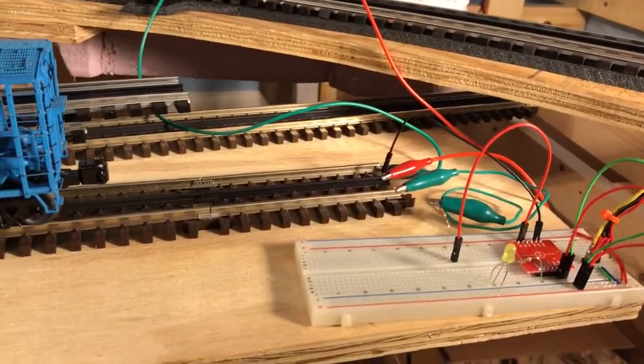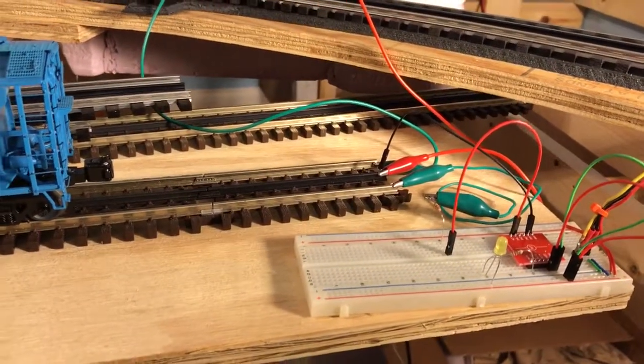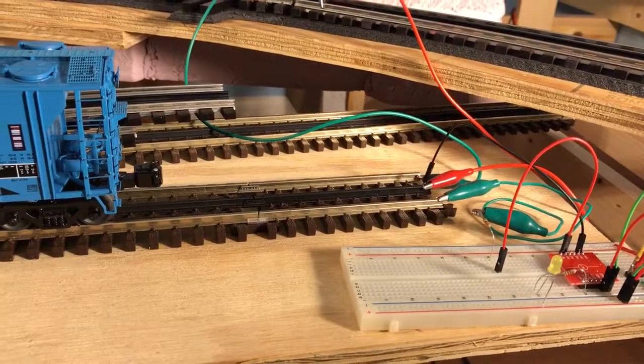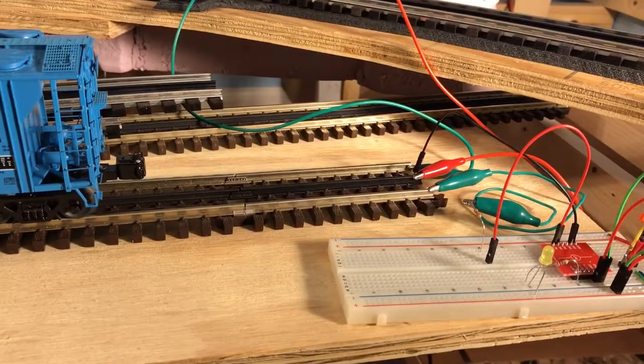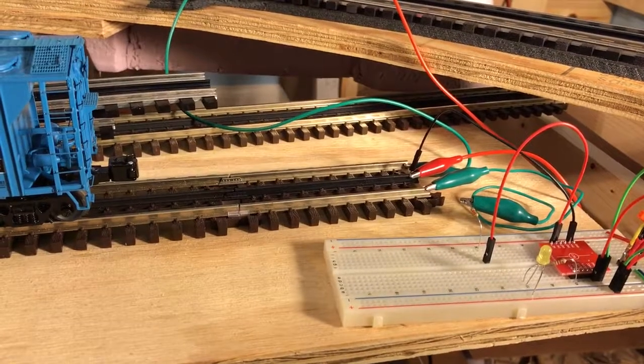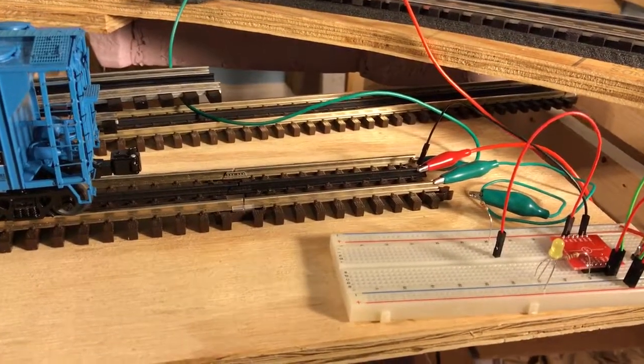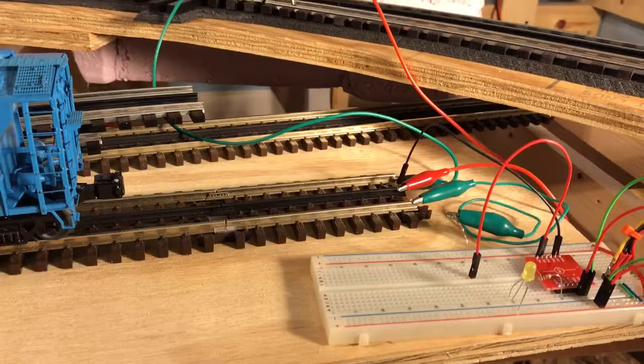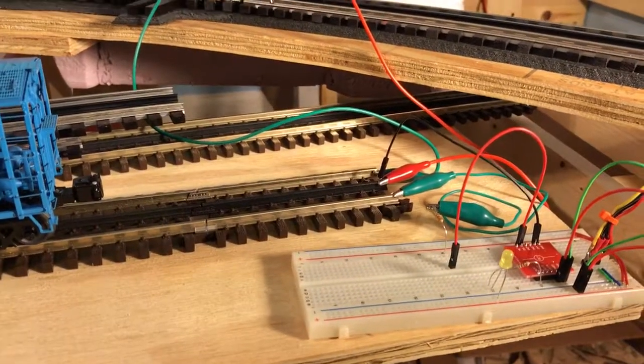This is a quick proof of concept video. I've been wanting to add signals to the layout, and to do that I need to detect occupancy. I didn't want to use infrared sensors or any pre-made systems. I just wanted to write a little bit of software and put a few circuits together and have some fun with it.